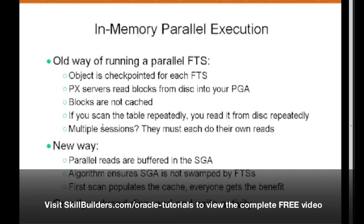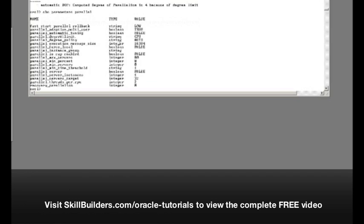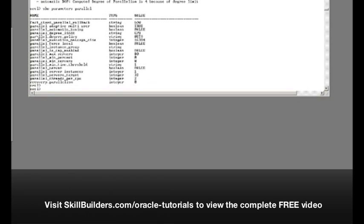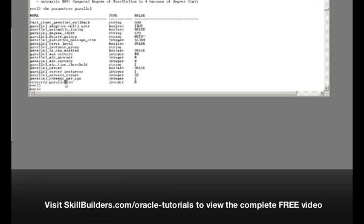Now we have a new technique enabled automatically — no change to the software. Parallel reads can now be buffered in the SGA. To see how this actually functions, it comes down to our old friend Parallel Degree Policy. If that is set to auto, then this mechanism can be automatically enabled.